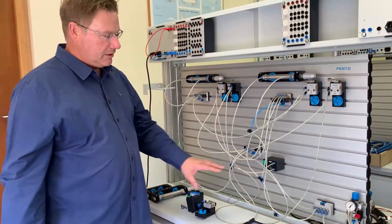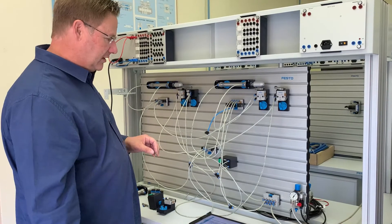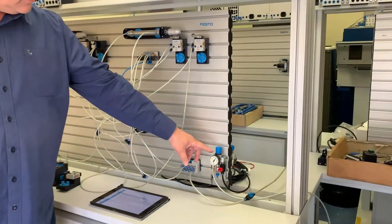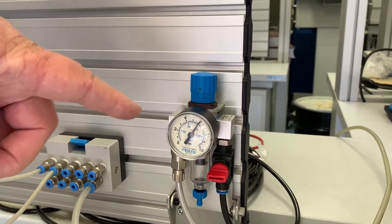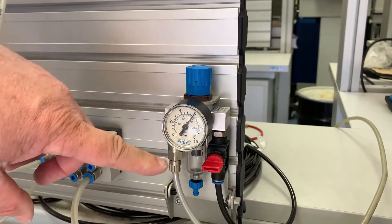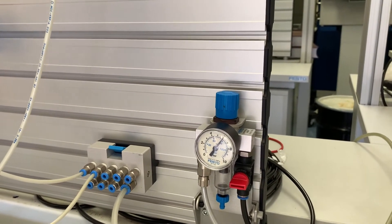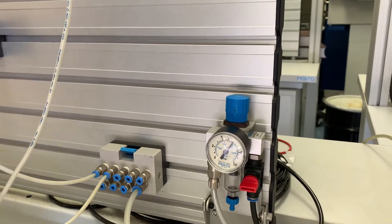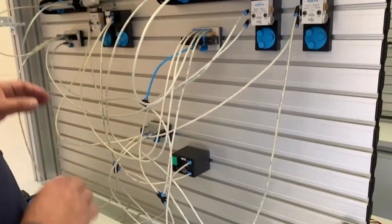If we then just follow the flow through the circuit and look at how things are connected up you can see the first element on the board here is an air service unit. As you know it's got the regulator, it's got a pressure gauge, it's also got a water trap and a filter on the inside so the air supply will then come to this distribution block and from there it goes to all of the components.